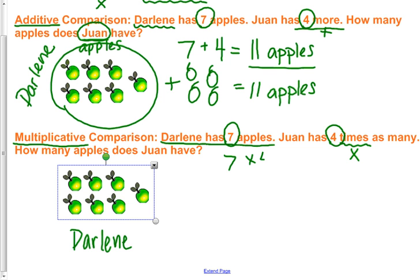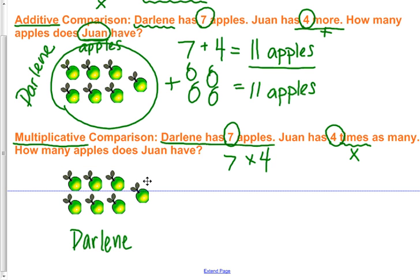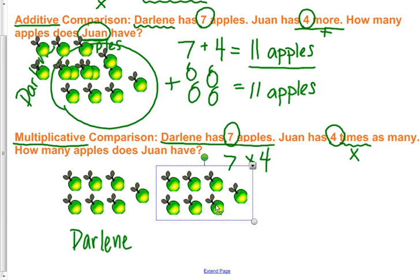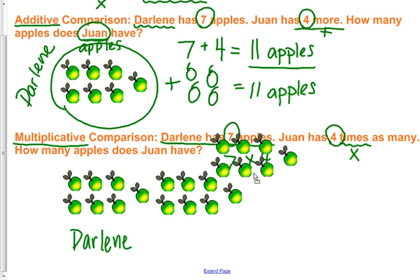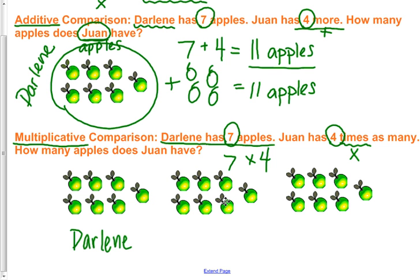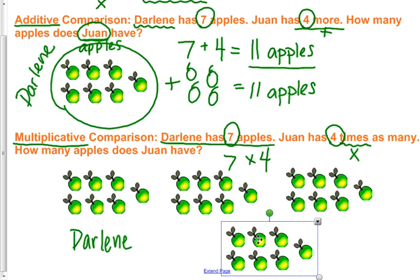We need seven apples which we have, and then we're going to copy them four times. So here's one, and we need four groups of the seven. So here's a second group, a third group, and here's the fourth group to show seven groups of four, or seven times four.